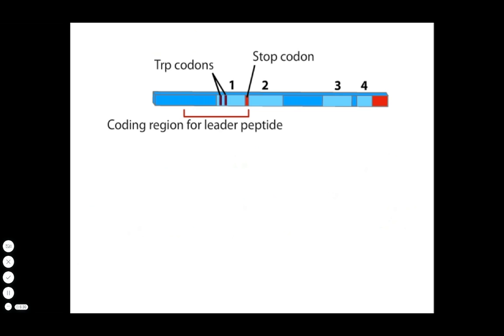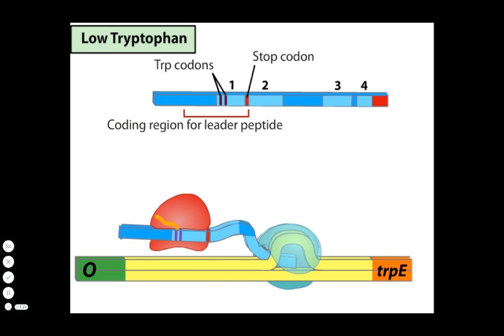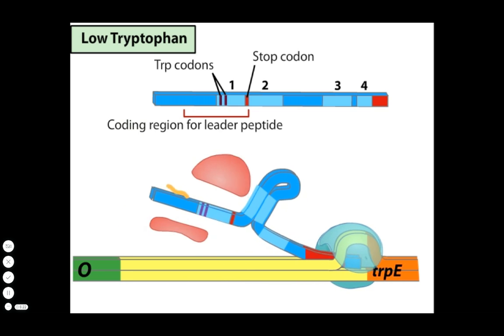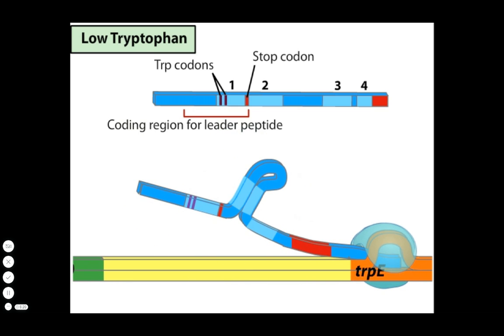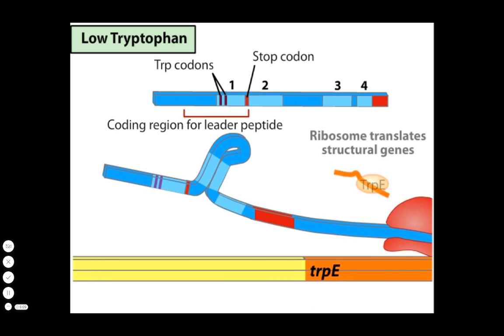In contrast, under conditions of low tryptophan, the ribosome stalls at the tryptophan codons. Stalled at this position, region 2 is free to pair with region 3. Because regions 3 and 4 do not pair, RNA polymerase does not pause at the attenuator. RNA polymerase continues to transcribe the operon. A new ribosome begins translation of the structural genes.